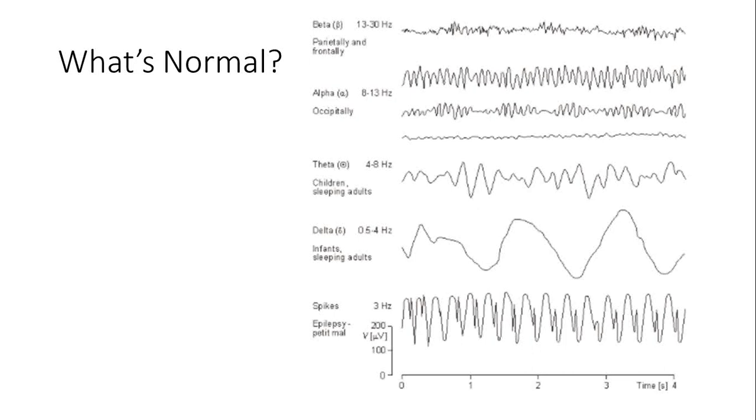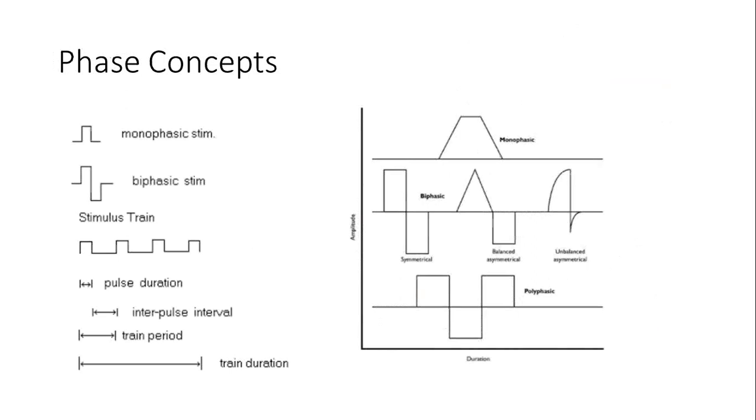You want to fix in your mind what's normal, because then it's much easier to detect artifact. Most of the things you see that don't look like this are artifact. To understand artifact and EEG waves, we need to think of two phase concepts: monophasic and biphasic.